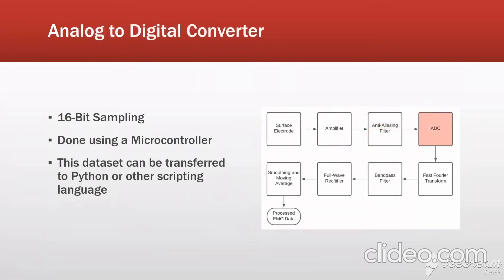Once we have filtered our data, we can then put it into an analog-to-digital converter using a microcontroller. Generally in the professional field they use 16-bit sampling, but it can also be used as low as 8 bits. Once we have this data sampled, the easiest way I have found would be to transfer this data set to be analyzed in a program such as Python or MATLAB, where we can understand our data better than if we were to try to perform this signal processing with our embedded system.